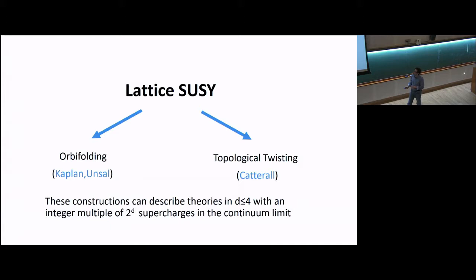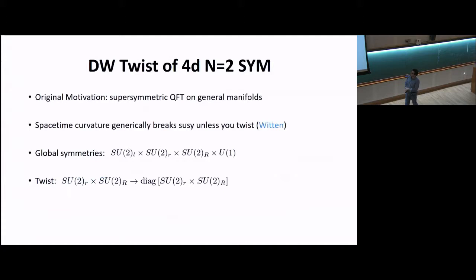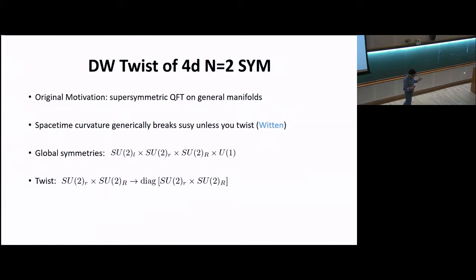I'd like to pursue this topological twisting approach in this talk. I'll start with a historical motivation for it, which will actually be the practical starting point for going to 3D N=4 on a lattice. As far as I know, the idea of topological twisting was first developed by Witten, whose motivation was to understand supersymmetric quantum field theory on general smooth manifolds, with the goal of deriving certain topological invariants of these manifolds from a physical point of view.